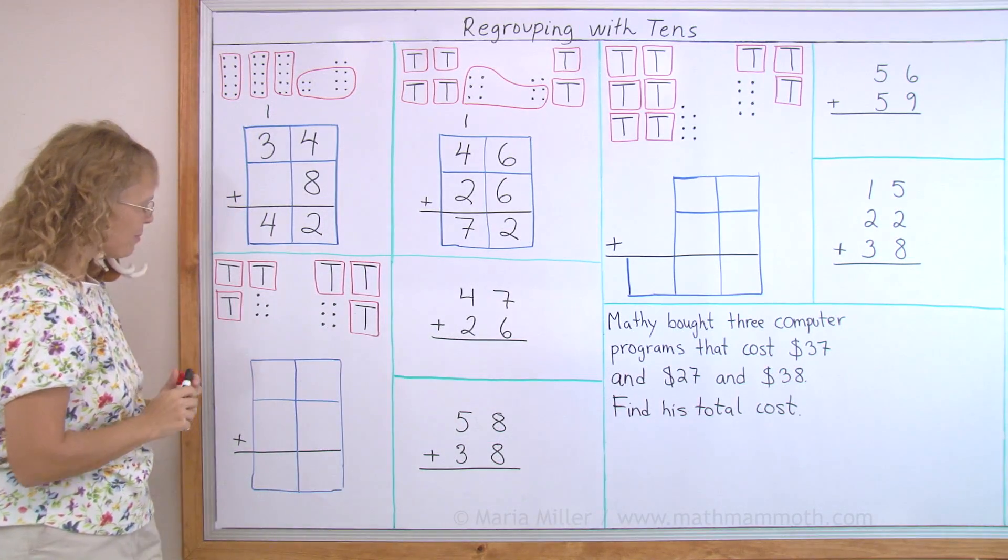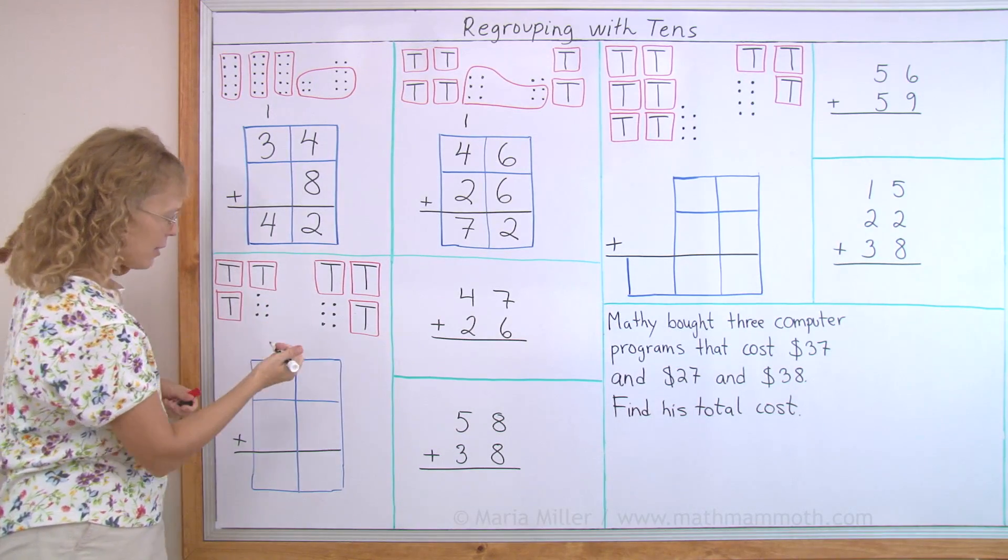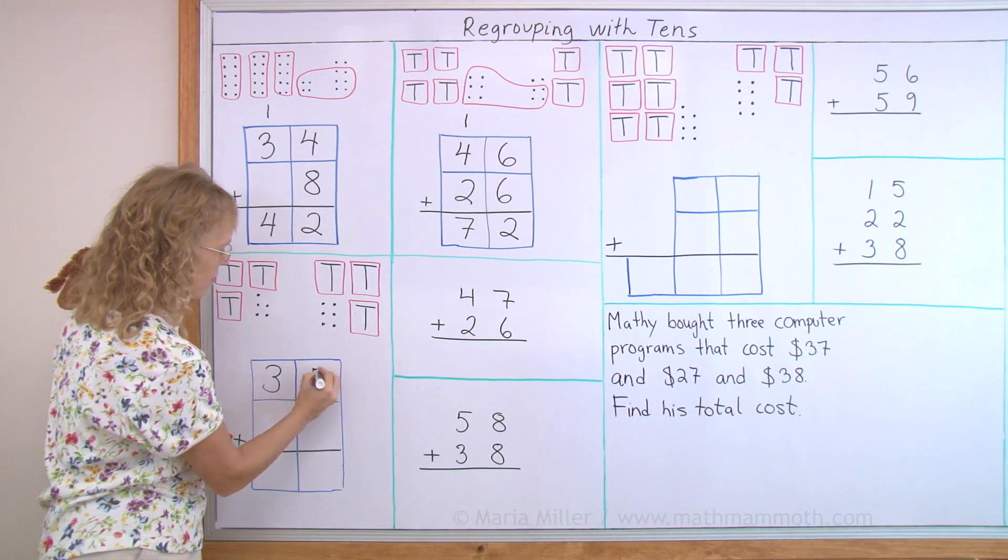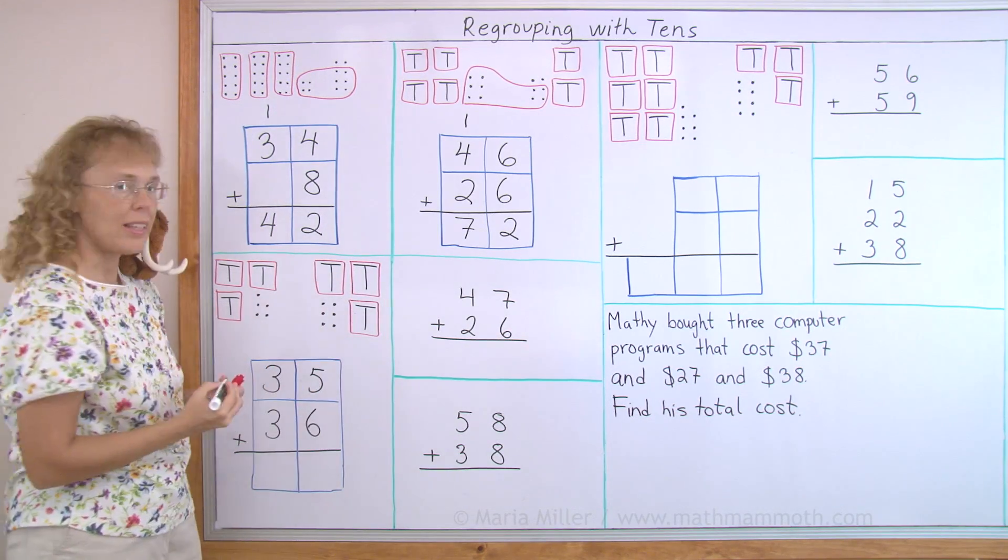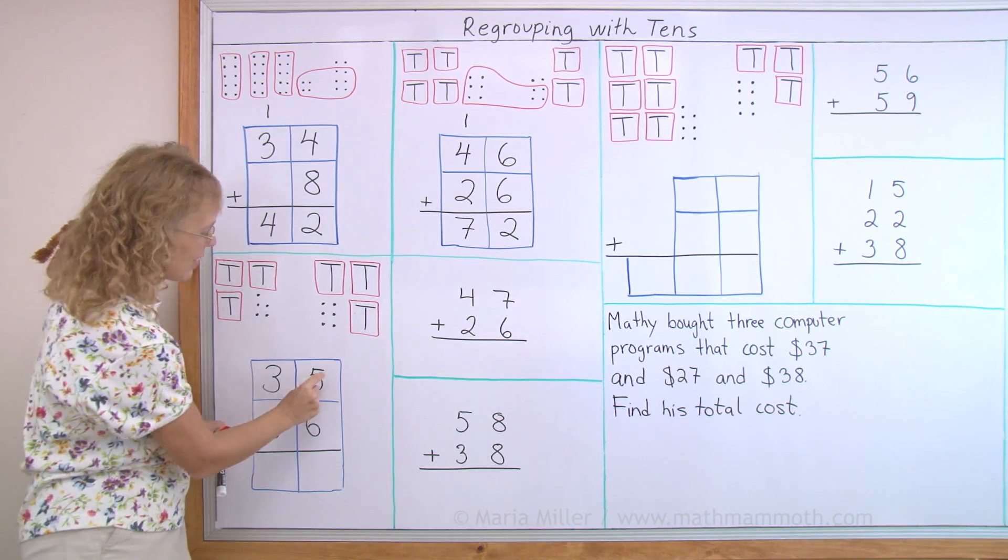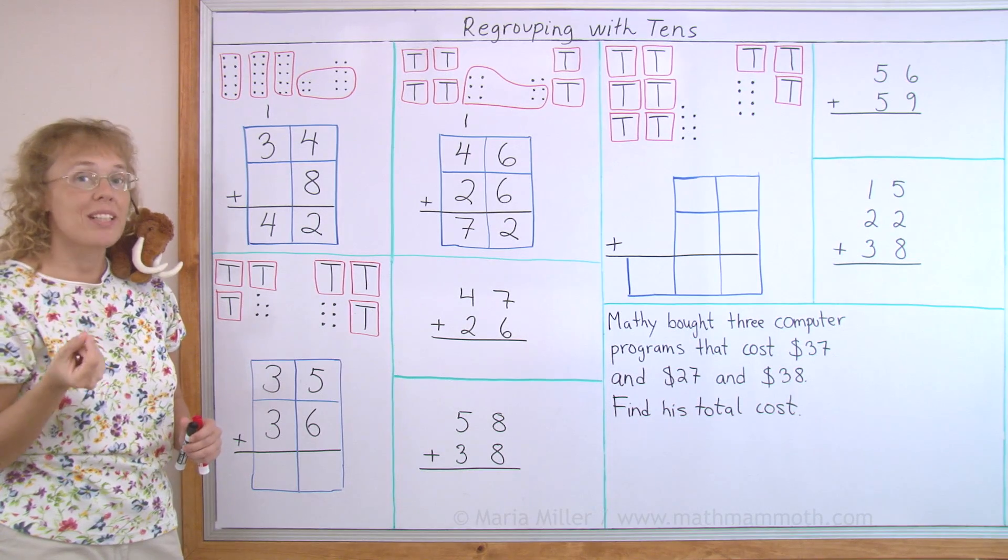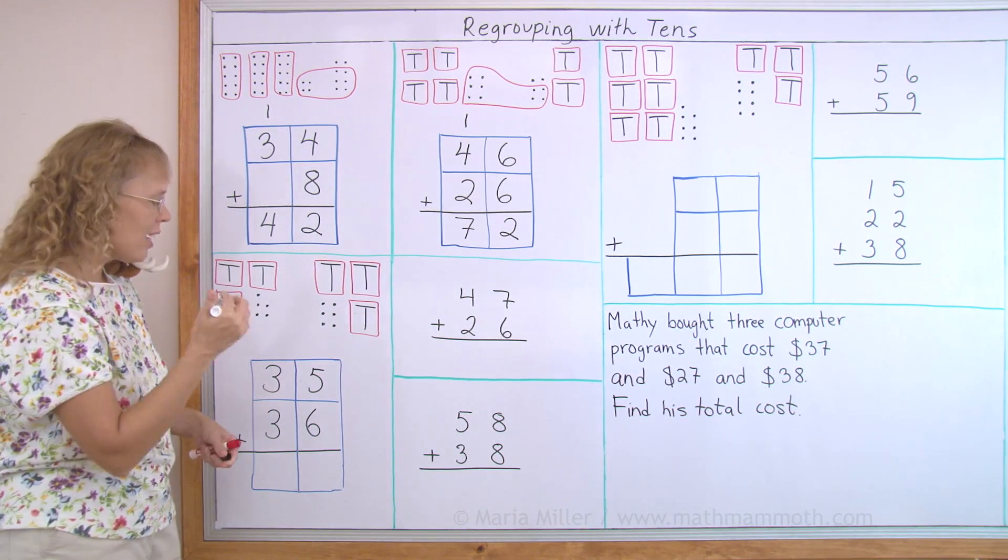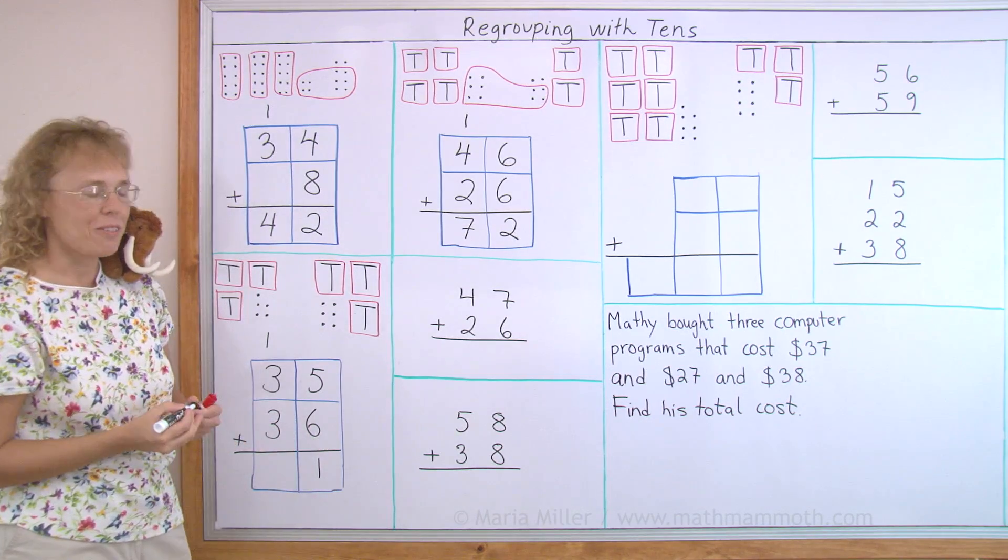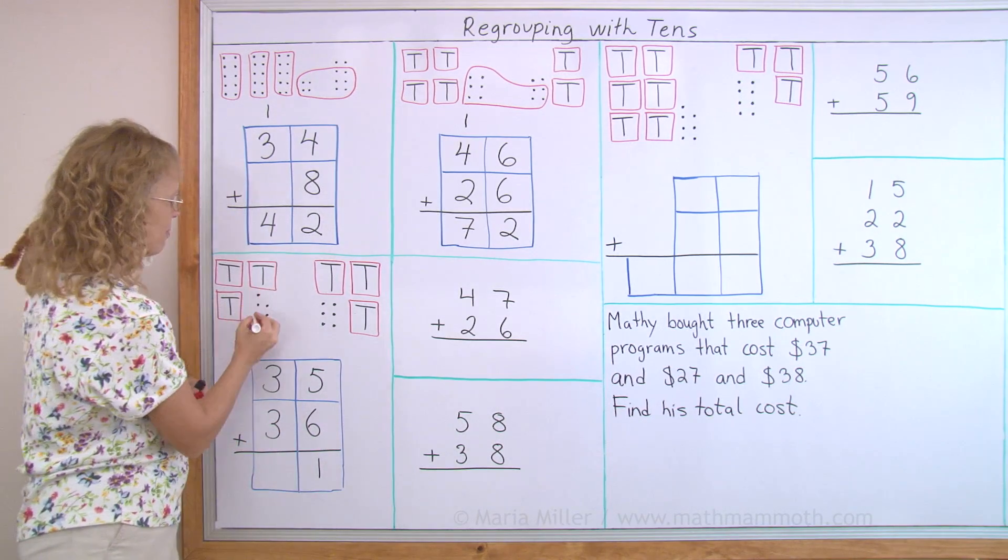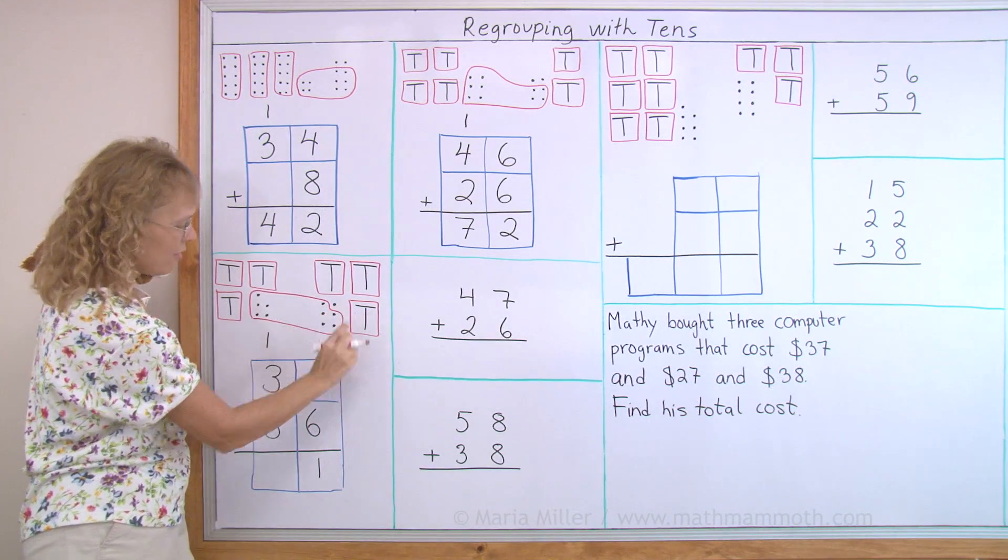And once more. My first number to add, 35. The second number here, 36. Again, I look at the ones, five and six. Five plus six is eleven. That's more than ten. So I write the ten here that I got. And then that leaves one, one over here. And in the picture, I make a ten. And then there's the one individual dot there.